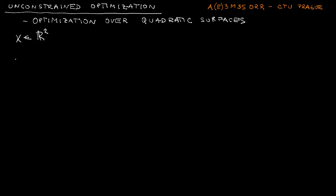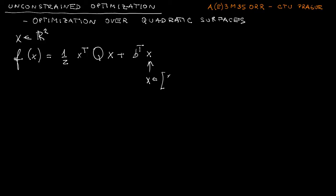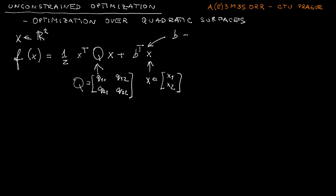We are going to investigate functions given by the following expression, where x is a pair of two real variables x1 and x2, Q is a matrix with real entries, and B is a vector of real entries as well.